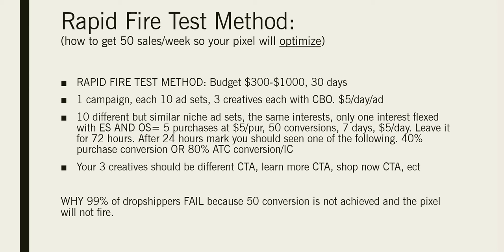The rapid-fire test method uses 10 different but similar niche ad sets — the same interest, flexed with engaged shoppers and online shopping. You'll roughly get five purchases at $5 per purchase, achieving 50 conversions in seven days. Each ad set should be left at $5 a day. It will find the best-performing creative within the ad set, and you can turn individual creatives on and off without affecting the optimization of the ad campaign.